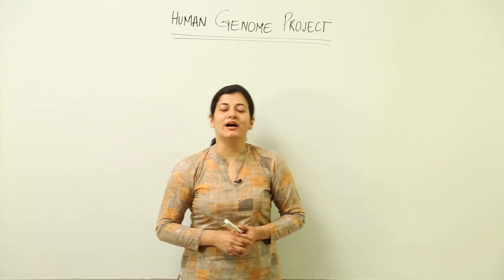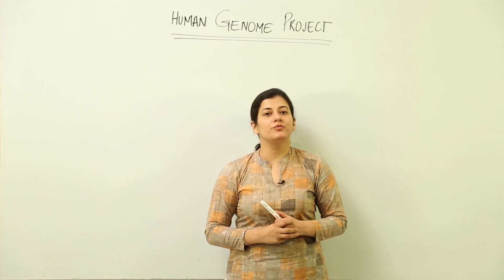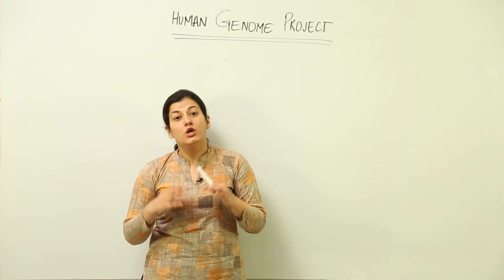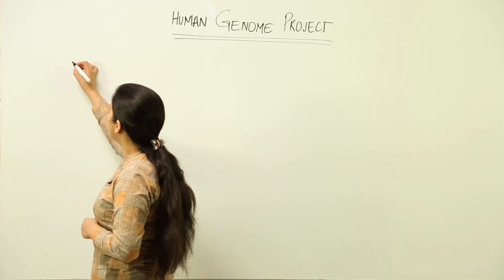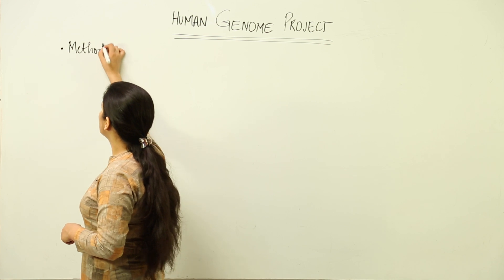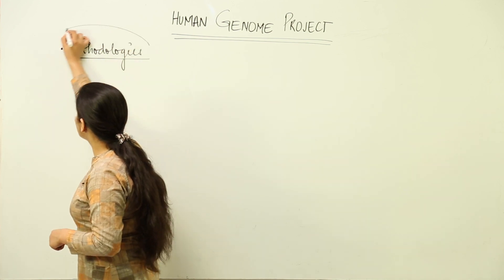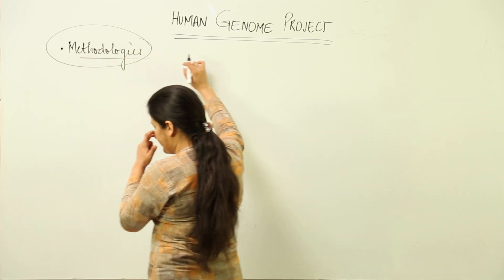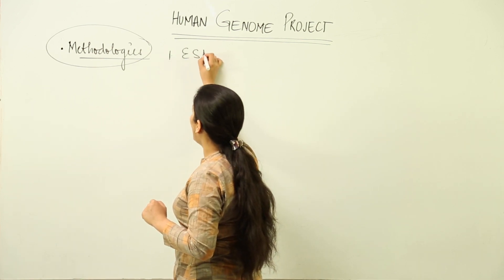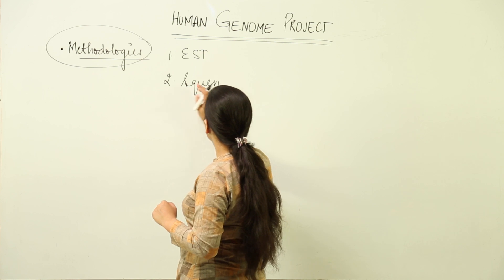In this lesson we are going to see how the enormous task of the Human Genome Project, where the entire genetic composition — the genome — had to be coded, was done. We are going to deal with the methodologies adopted for the Human Genome Project. There are two methodologies: one is EST and the second one is sequence annotation.